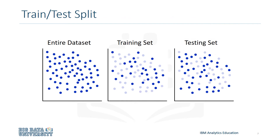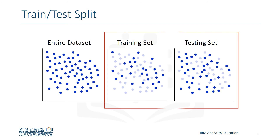One way to improve out-of-sample accuracy is to use another evaluation model called Train-Test-Split. Train-Test-Split involves splitting the dataset into training and testing sets respectively, after which you train with the training set and test with the testing set. This will provide a more accurate evaluation on out-of-sample accuracy, because the testing dataset is part of the dataset that could have been used to train the data — we know the outcome of each data point, making it great to test with. And since this data has not been used to train the model, the model has no knowledge of the outcome of these data points, so in essence it's truly an out-of-sample testing.